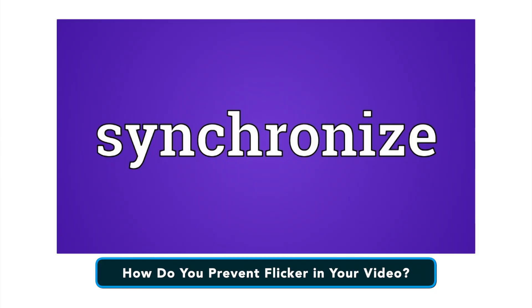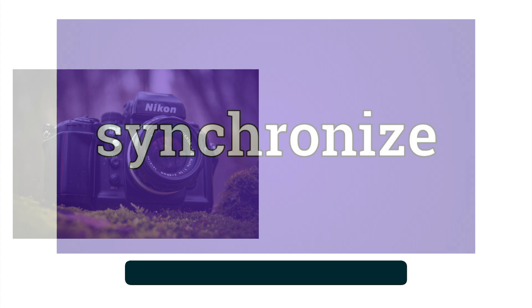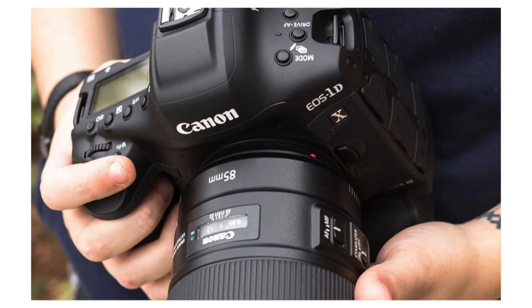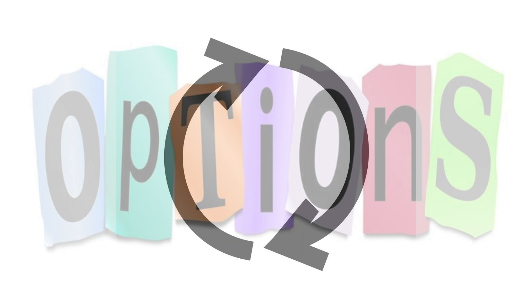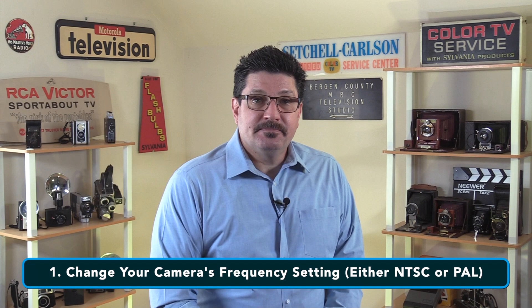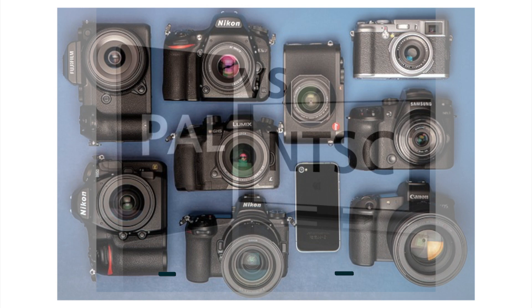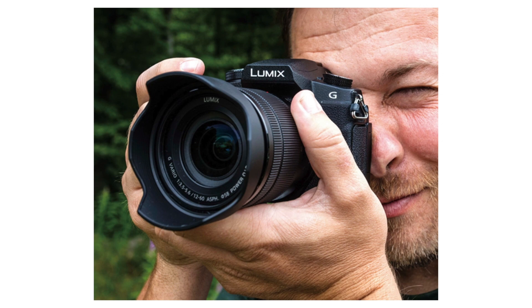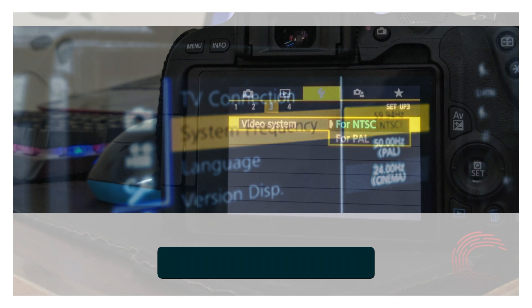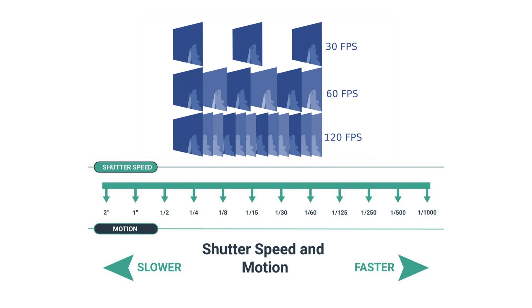So how do you prevent flicker in your video? It all comes down to synchronization. If you synchronize your camera to the electrical frequency of the lighting, you are basically telling your camera to only take pictures of the on portion of each cycle. There are four options. Number one is to change your camera's frequency setting — either NTSC or PAL. Many cameras today have the option to change between 50 Hertz PAL or 60 Hertz NTSC. If your camera has this option, simply match your camera's frequency with the electrical frequency of your environment, and you can safely use any frame rates or shutter speeds your camera offers.